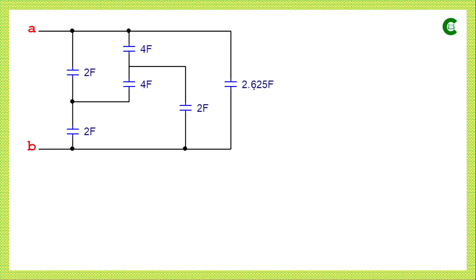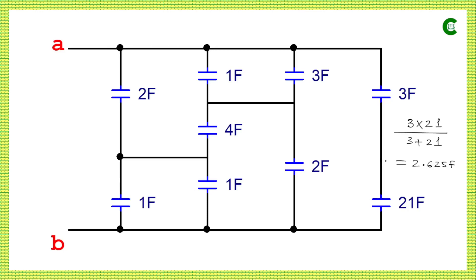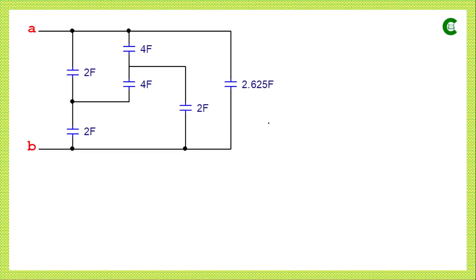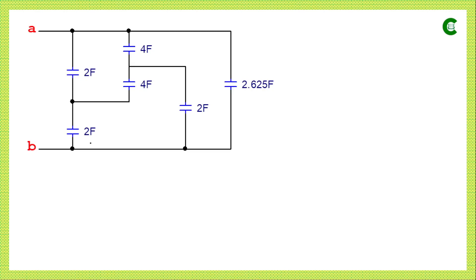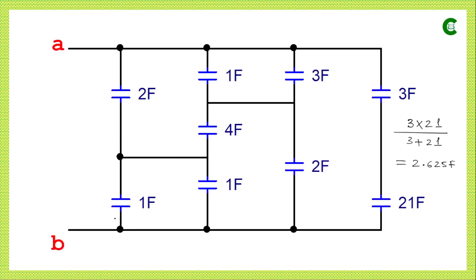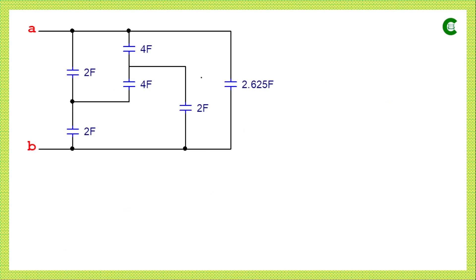Finally this value will be 2.625F. This is the modified circuit where 2.625F is the equivalent of the two series capacitors, 4F is the equivalent of the parallel pair, and 2F is the equivalent of the 1F and 1F in parallel. We can see there is one delta connection and one star connection of capacitors, and none of the capacitors are simply in series or parallel. We need to convert either from star to delta or delta to star, and we will analyze which is more beneficial.